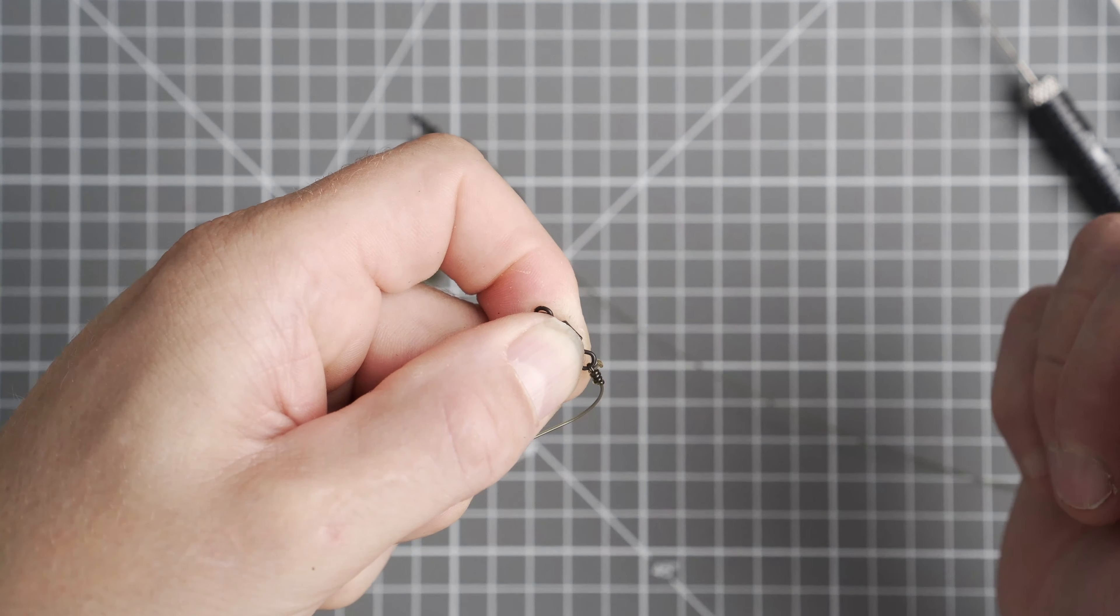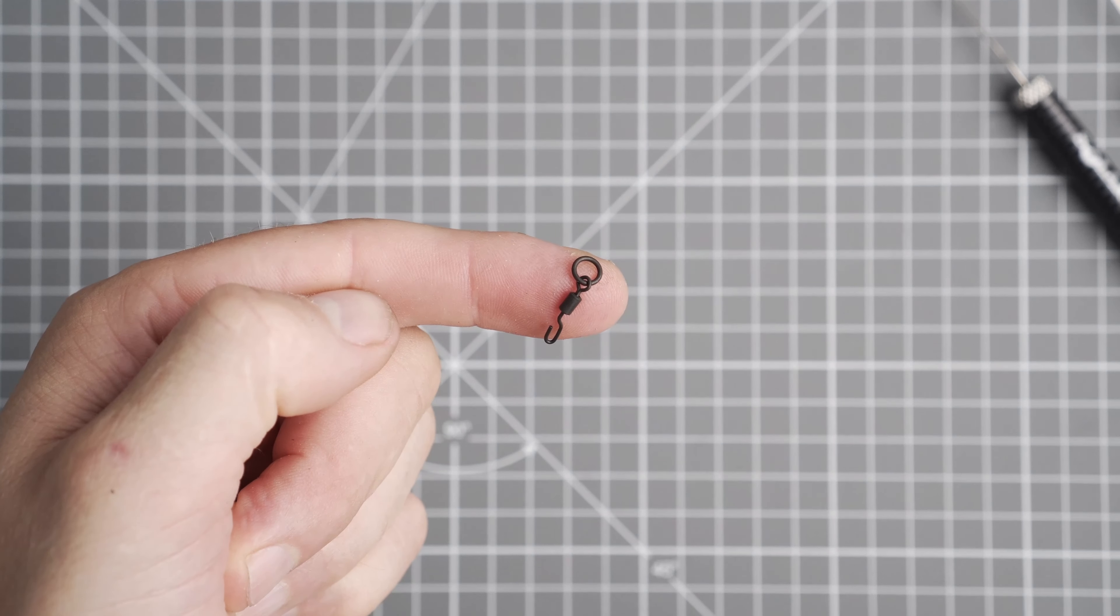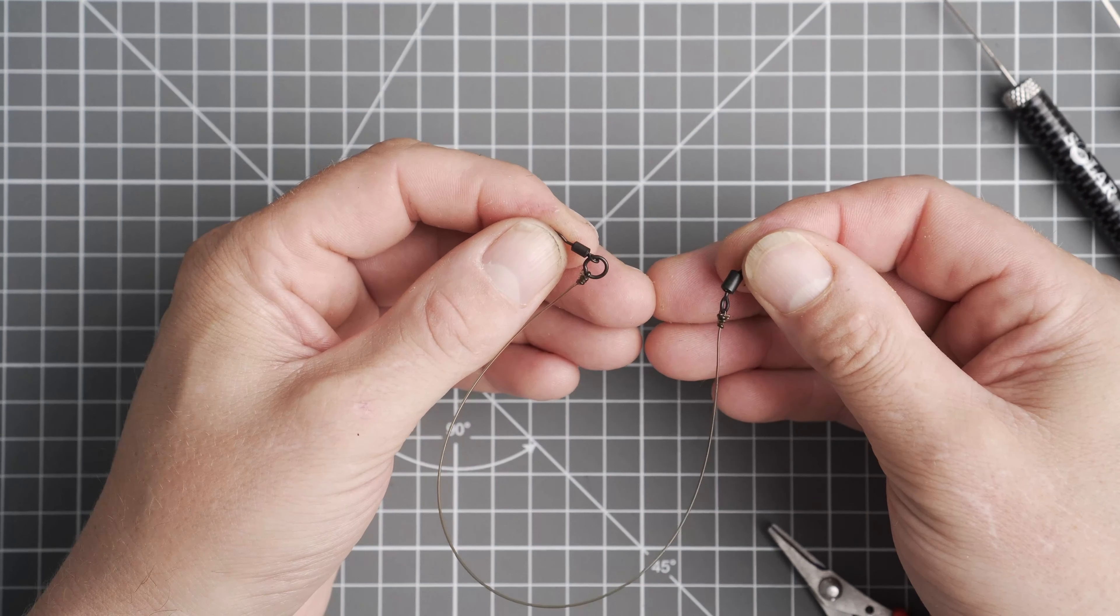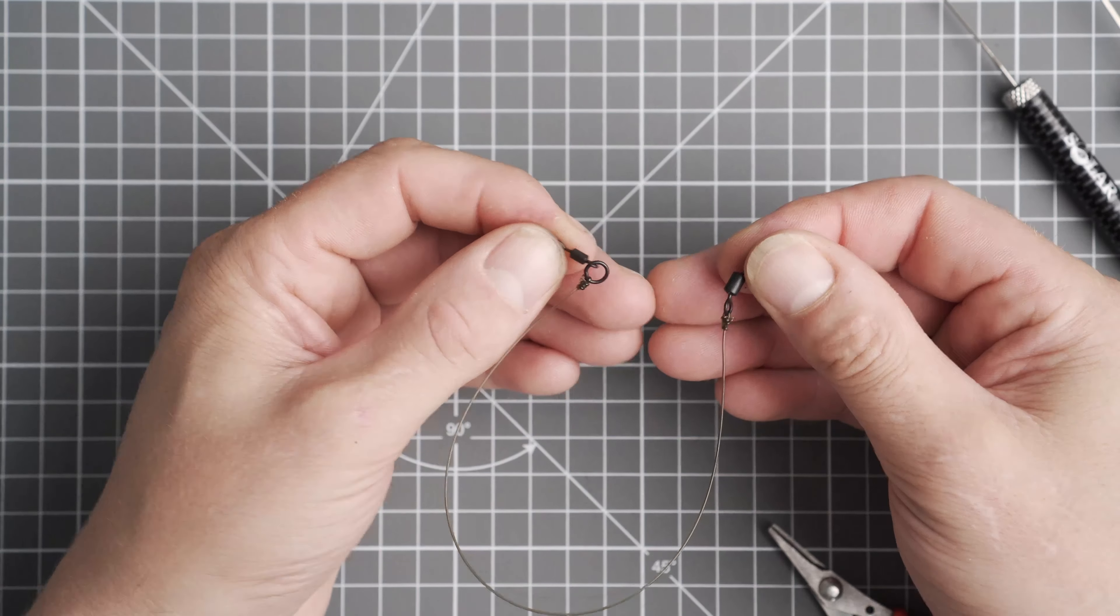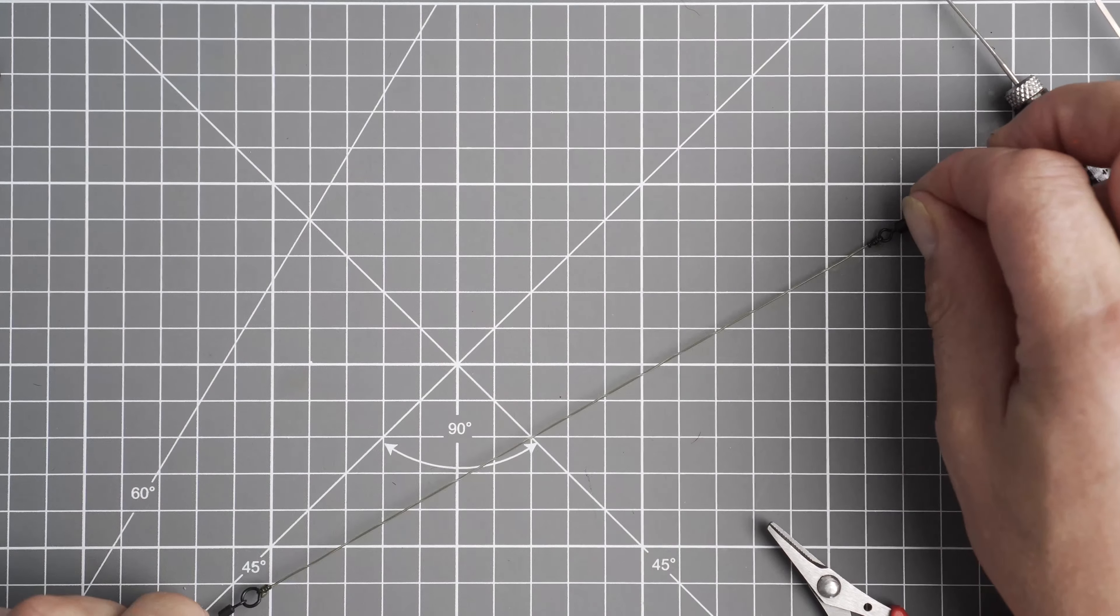Now with a Ronnie swivel I'll do exactly the same and repeat the process that I've done with the ring swivel. And there you have it. There's your boom section complete.